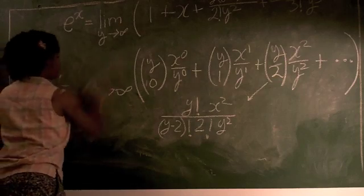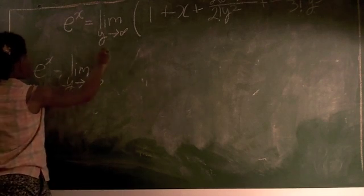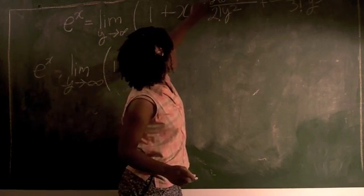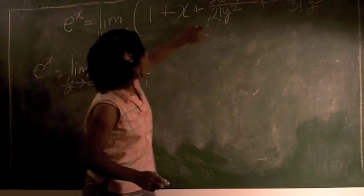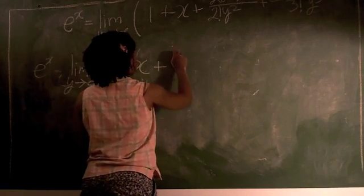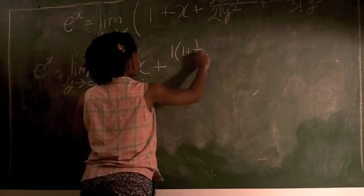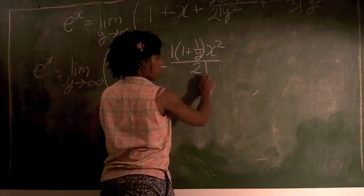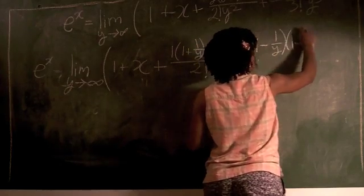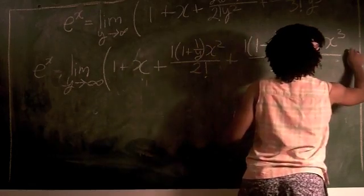All right, let's take it to the next step. I'll start over here for extra space. e to the x is equal to the limit as y goes to infinity of the quantity of 1 plus x. Now, what I want to do is I have y squared in the denominator, and I see y appears 1, 2 times in the numerator. So I'm going to divide the numerator by y, and I'm going to divide the product in the numerator termwise. We have y divided by y is 1. We have y minus 1 divided by y will be 1 minus 1 over y times x squared all over 2 factorial. Then we have 1 minus 1 over y times 1 minus 2 over y times x to the third all over 3 factorial. And this continues on and on and on.